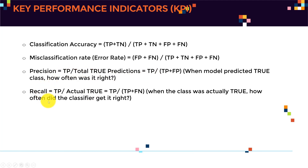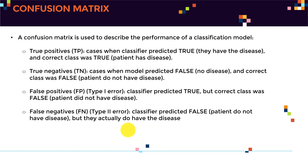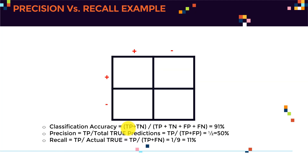The second important definition is what we call recall. Recall is simply true positives divided by true positives plus false negatives. Recall means: when the class was actually true, how often did the classifier get it right? In other words, when in reality the class was actually positive, how many times was I able to detect those positive cases? If you're confused, let's take a look at a practical example.